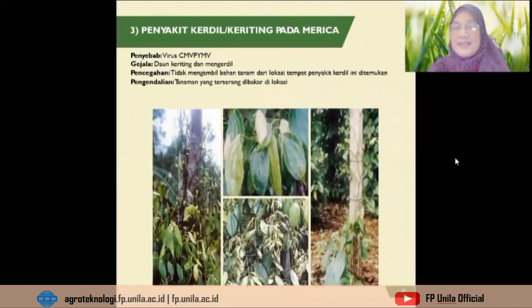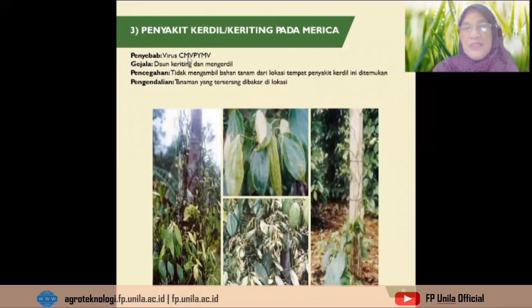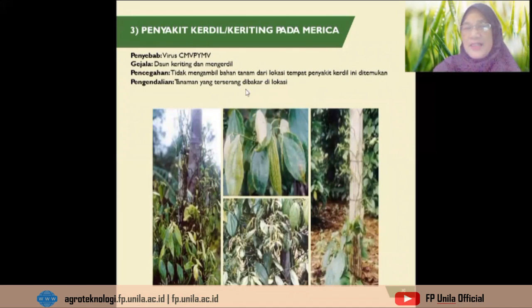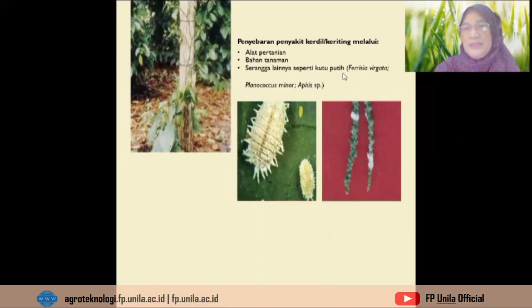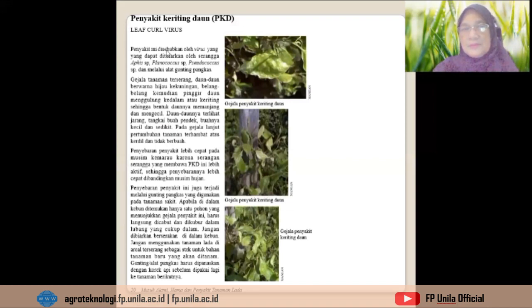Yang ketiga adalah penyakit kerdil atau keriting pada merica. Penyebabnya adalah virus CMV atau PYMV. Gejalanya daun keriting dan mengerdil. Pencegahannya tidak mengambil bahan tanaman dari lokasi tempat penyakit kerdil ditemukan. Pengendaliannya tanaman yang terserang dibakar di tempat. Penyebaran penyakit kerdil atau keriting melalui alat pertanian, bahan tanaman yang telah sakit, atau serangga seperti kutu putih Ferrisia virgata dan Planococcus minor. Penyakit ini juga disebut leaf curl virus.